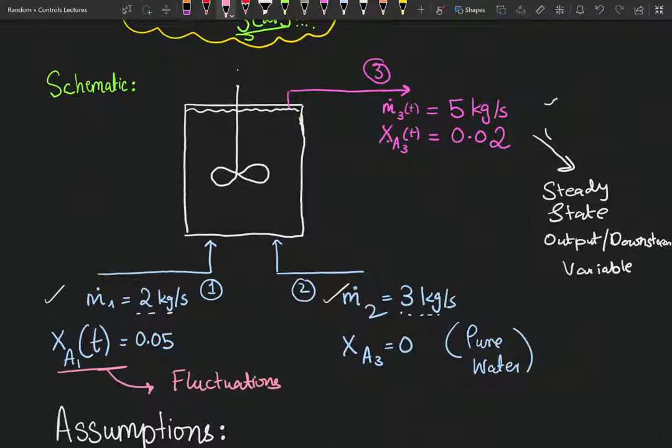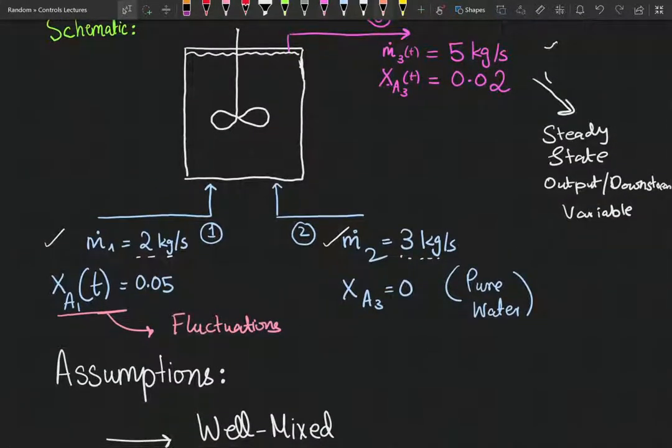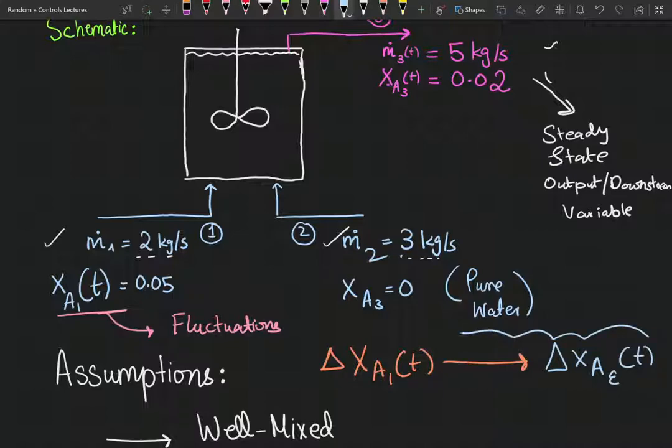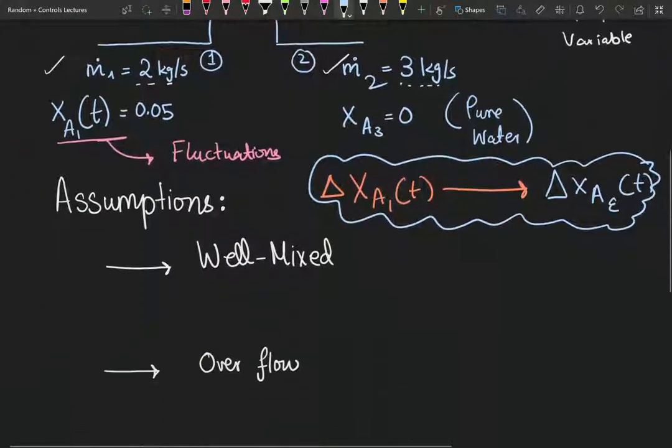We're trying to observe the effect of the fluctuations in the inlet mass concentration of stream one. The mass concentration of specie A in stream one is going to vary. We're going to map the deviations in the inlet concentration to our final output variable, which is going to be XA3. That's what we're trying to see.